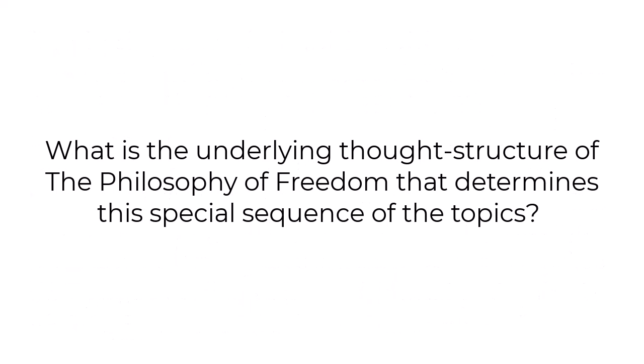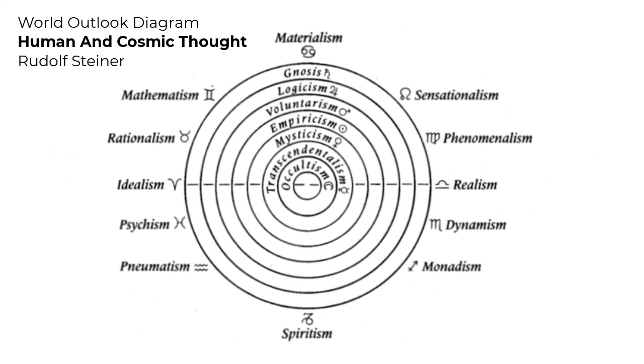What is the underlying thought structure of the Philosophy of Freedom that determines the special sequence of the topics? This thought structure is found in Rudolf Steiner's World Outlook Diagram from his Human and Cosmic Thought lectures. The mind can grasp truth from twelve different perspectives. The World Outlook Diagram places the twelve possible world views in a special order to indicate how they relate to each other.